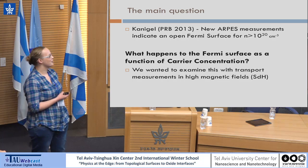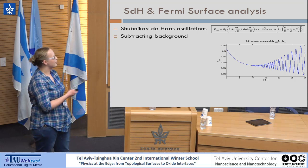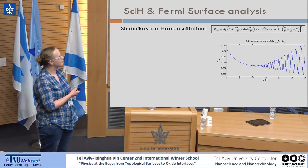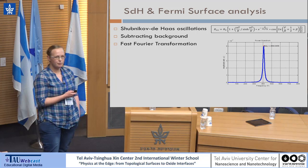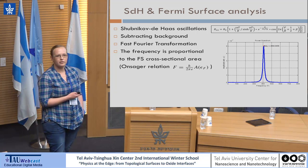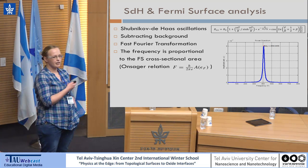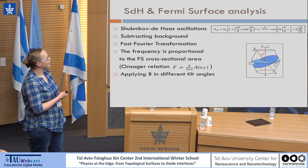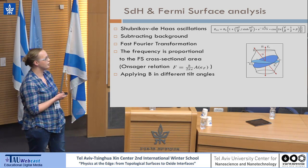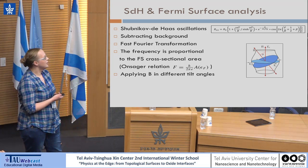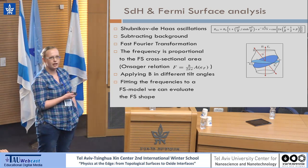We used the Shubnikov-DeHaas effect in very high magnetic fields. The Shubnikov-DeHaas effect is oscillations in the magnetoresistance. You analyze the data and extract the frequency of these oscillations, and according to the Onsager relation, this frequency is directly proportional to the cross-section of the Fermi surface in the direction of the magnetic field. By tilting the sample relative to the magnetic field and measuring the frequency at different tilt angles, you can reconstruct the entire Fermi surface.